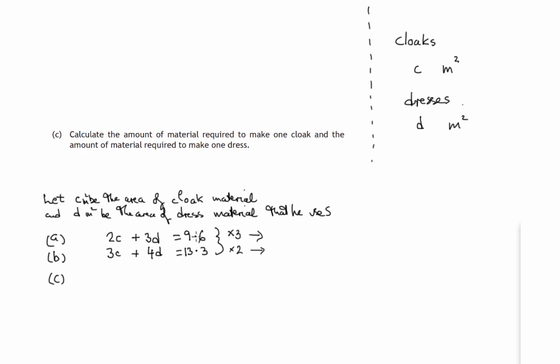So both sides of this equation need to be multiplied by 3, so in particular 3 times 2C is 6C, 3 times the 3D is 9D, 3 times 9.6, 3 times 6 is 18, 3 times 9 is 27 plus 1 is 28.8. No calculators in this paper. Double the second equation, all of the terms, 2 lots of 3C is 6C, 2 lots of 4D is 8D, double 13.3, that's 26.6.